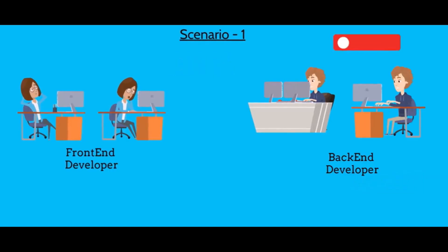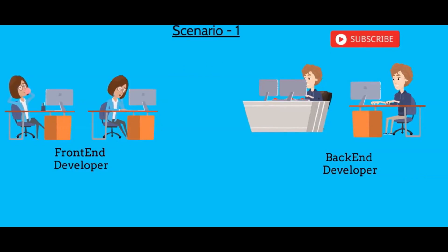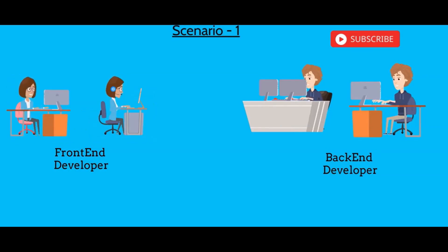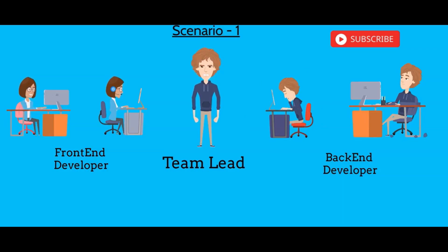Let's take an example where we are not using an API blueprint. In this scenario, a back-end developer is creating his API and the front-end developer is waiting for the API to be ready, which means the front-end developer is not doing any work. Once the API is complete, the front-end developer starts his work but the back-end developer is not doing any work — ultimately the project delivery is getting late.